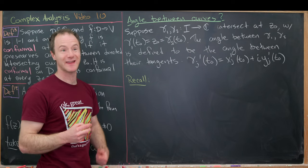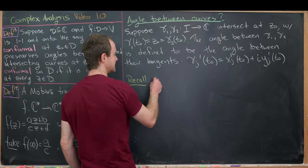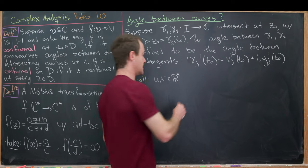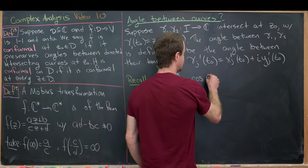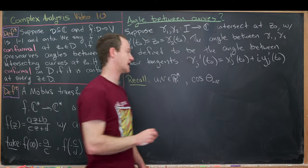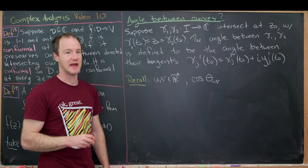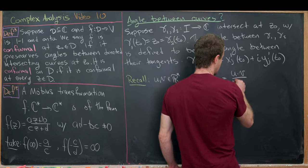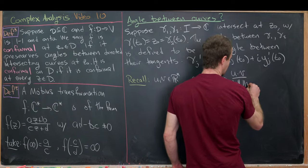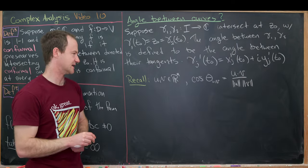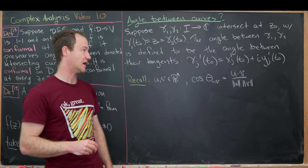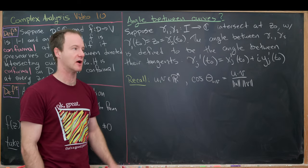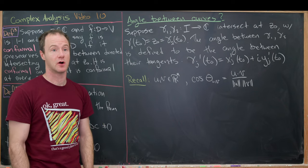Before writing down a formula, let's recall the following from linear algebra or multivariable calculus. If u and v are vectors in Rⁿ, then the cosine of the angle between u and v — denoted cosine of θᵤᵥ — is given by u·v over the norm of u times the norm of v. Now let's put that into the language of these intersecting curves, assigning the complex numbers (the values of our derivatives) to vectors in R².